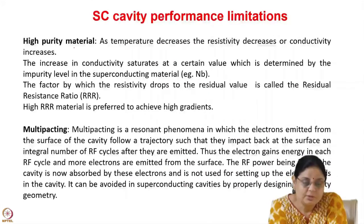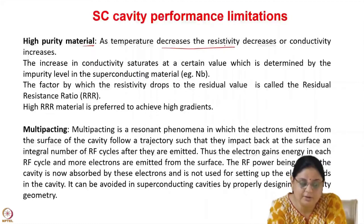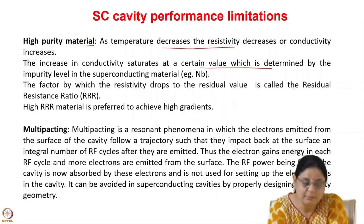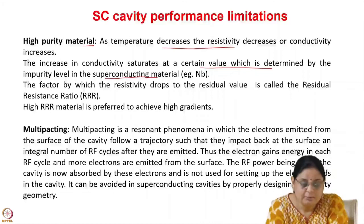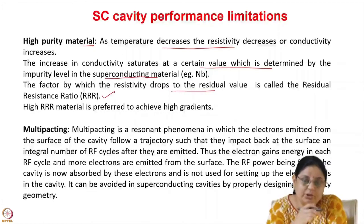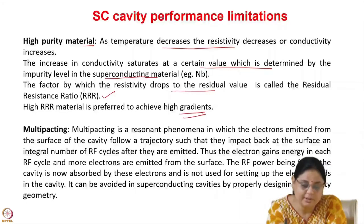High-purity materials are needed so that residual resistance is very low. As temperature decreases, resistivity decreases and conductivity increases. The increase in conductivity saturates at a value determined by the impurity level of the material. The factor by which resistivity drops to this residual value is called the residual resistance ratio (RRR). A material with high RRR is needed for achieving high accelerating gradients.